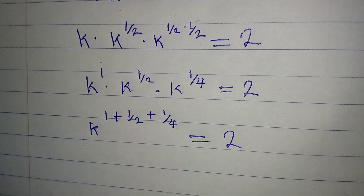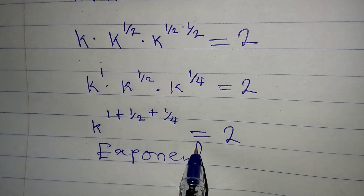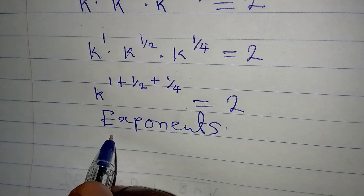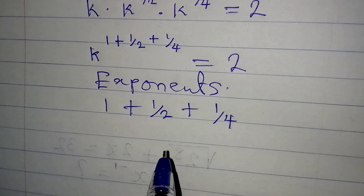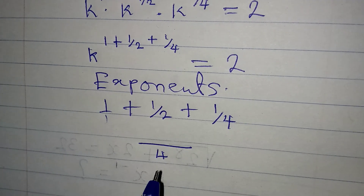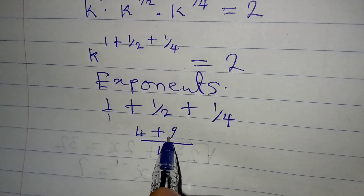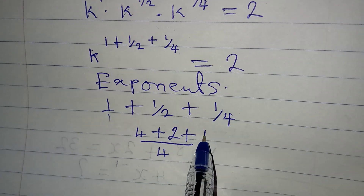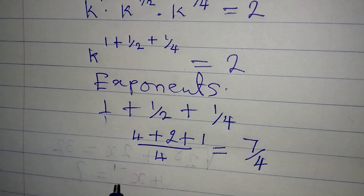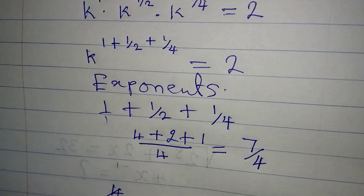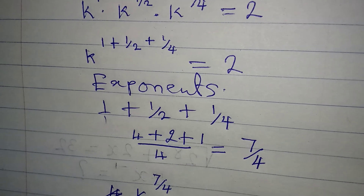Now let's add the exponents. We have 1 plus 1/2 plus 1/4. The LCM is 4. So: 4 divided by 1 is 4, times 1 is 4; plus 4 divided by 2 is 2, times 1 is 2; plus 4 divided by 4 is 1, times 1 is 1. That gives us 7 over 4. So we have k to the power of 7/4 equals 2.